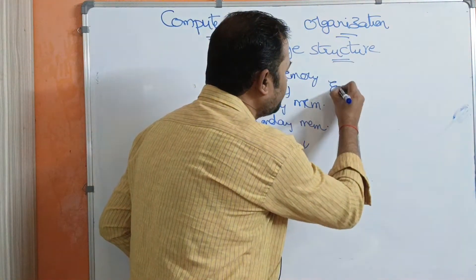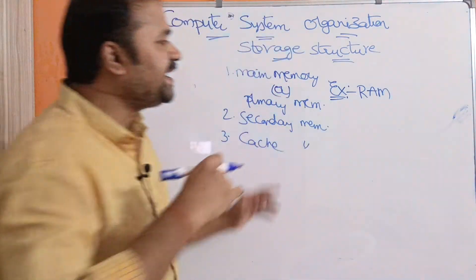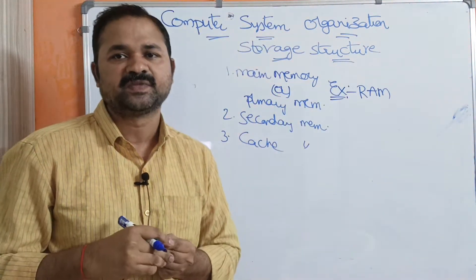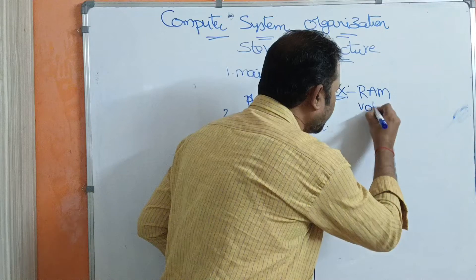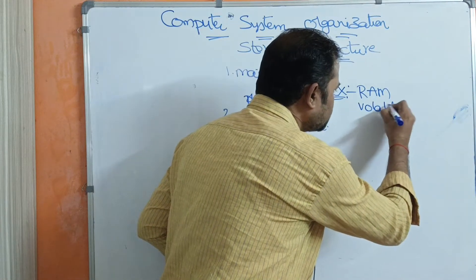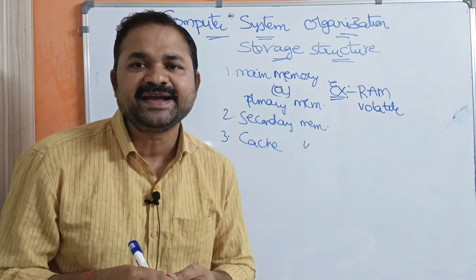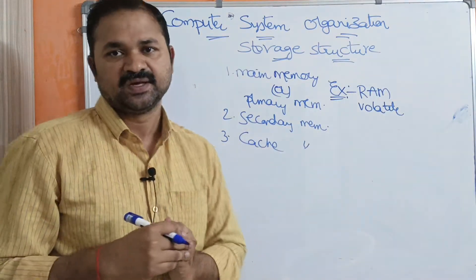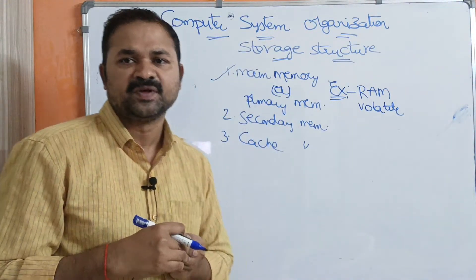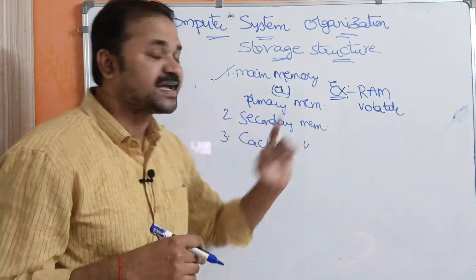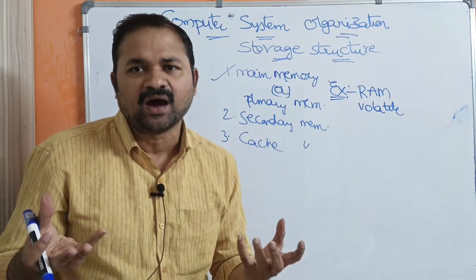The best example for primary memory or main memory is RAM, which stands for Random Access Memory. RAM is a volatile memory, which means when we switch off the computer, the contents of RAM will be lost. That is about main memory or primary memory.